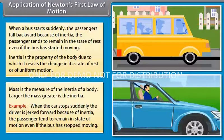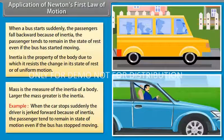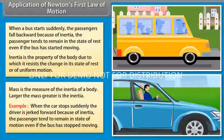Example: When the car stops suddenly, the driver is jerked forward because of inertia. The passenger tends to remain in the state of motion even if the bus has stopped moving.